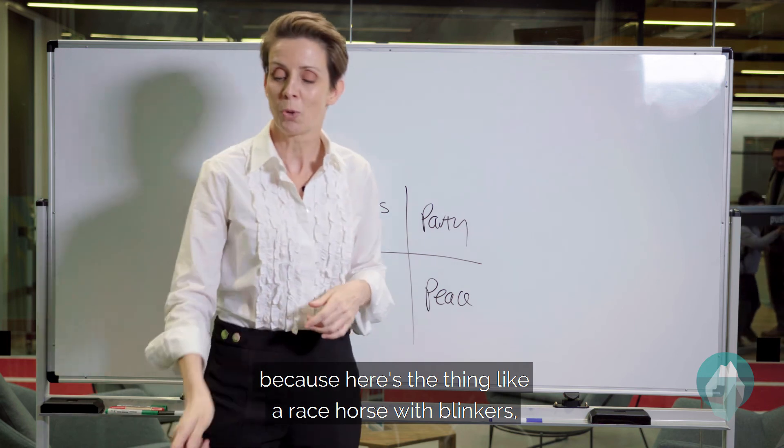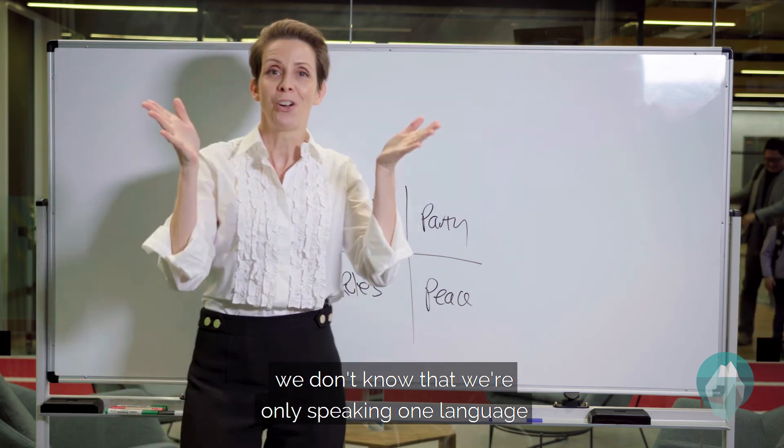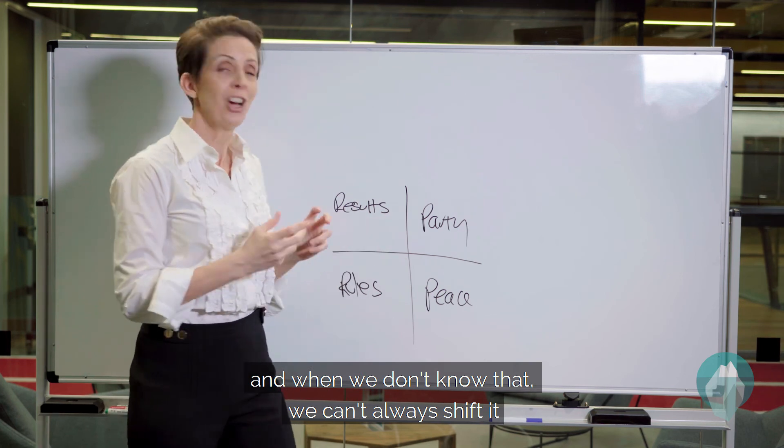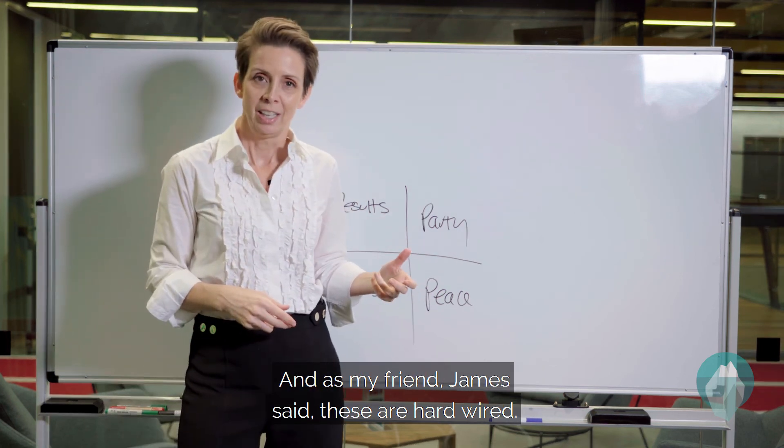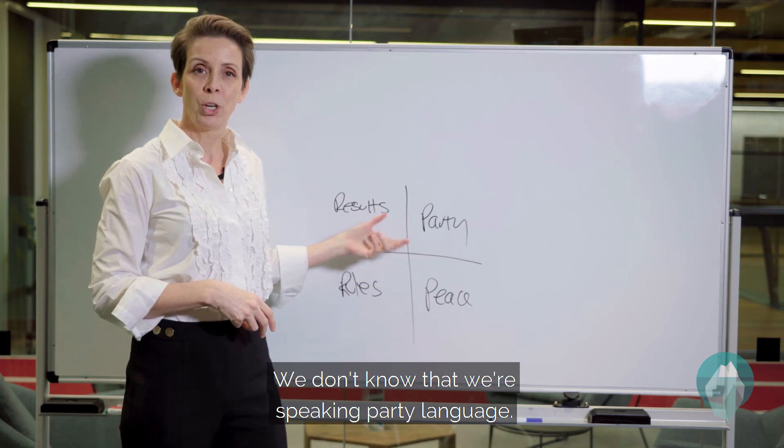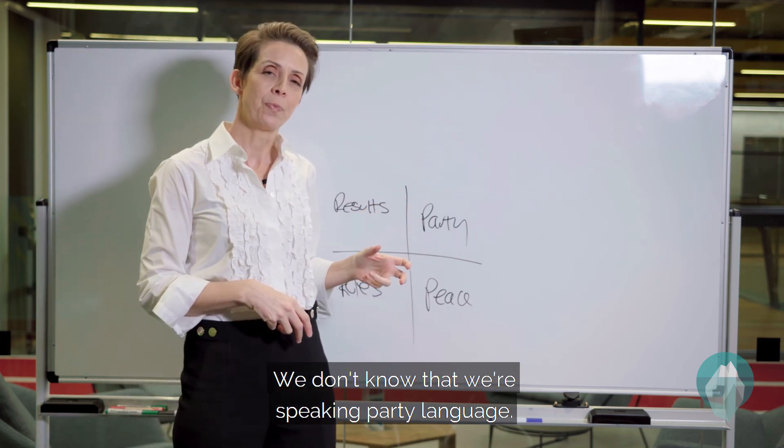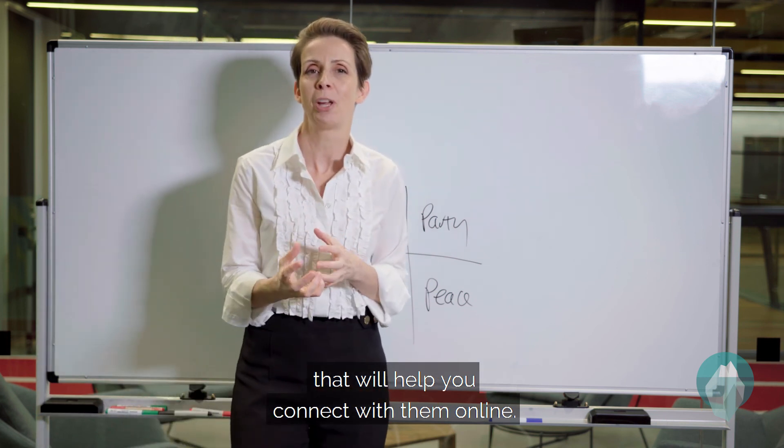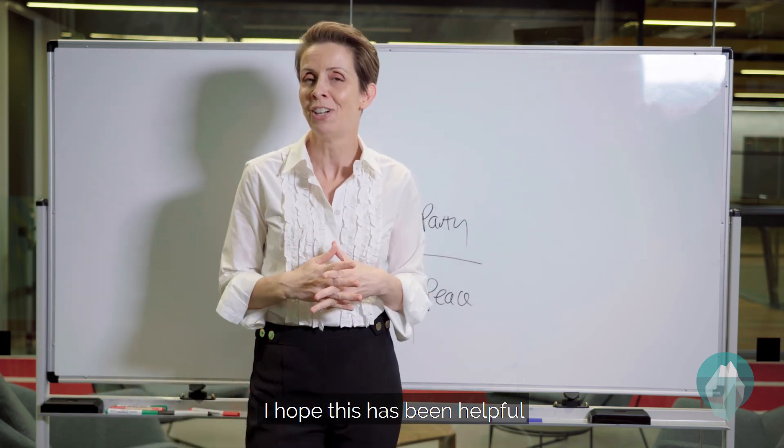Because here's the thing, like a racehorse with blinkers, we don't know that we're only speaking one language and when we don't know that we can't always shift it. And as my friend James said, these are hardwired. We don't know that we're speaking party language. So if you can be aware of where your people are at, that will help you connect with them online. I hope this has been helpful and I'll talk to you soon.